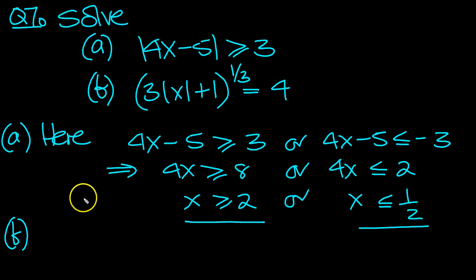So here, let's go to part b then. So here, let's cube both sides. Cubing both sides gives 3 modulus of x plus 1 is equal to 4 cubed, which is 64.